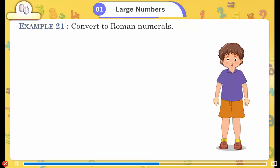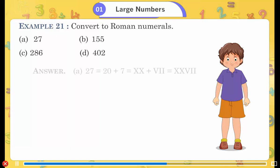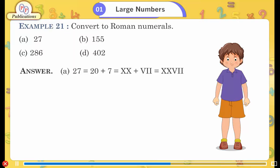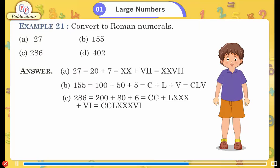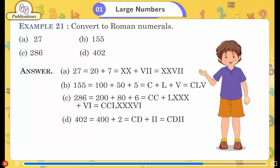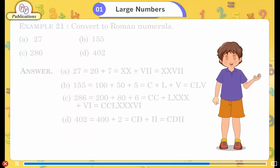Example 21: Convert to Roman numerals. a. 27 = 20 + 7 = XX + VII = XXVII. b. 155 = 100 + 50 + 5 = C + L + V = CLV. c. 286 = 200 + 80 + 6 = CC + LXXX + VI = CCLXXXVI. d. 402 = 400 + 2 = CD + II = CDII.